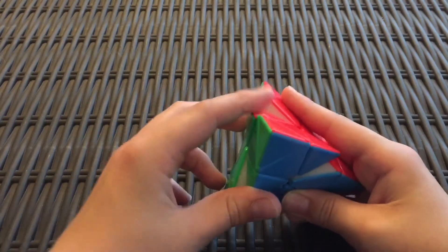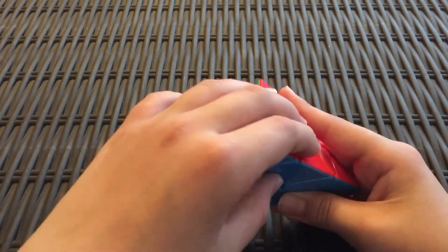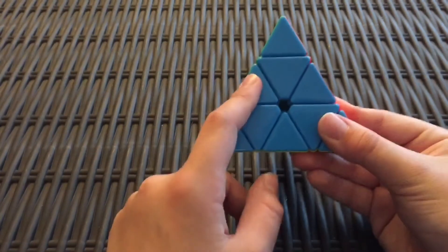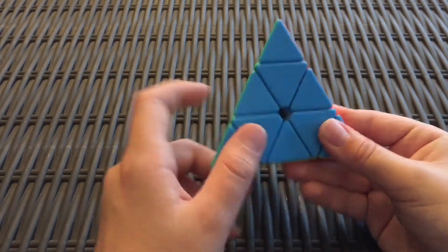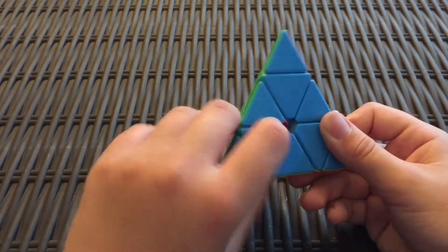Remember, these are uppercase letters. I'll get to the lowercase ones later. U prime is counterclockwise. L for left will be the bottom left corner, clockwise, and L prime counterclockwise.